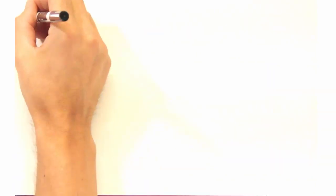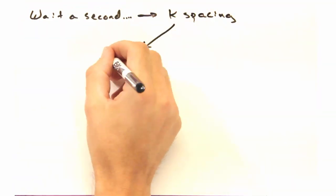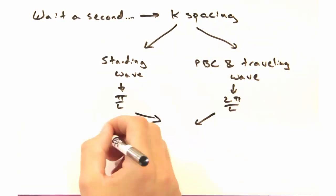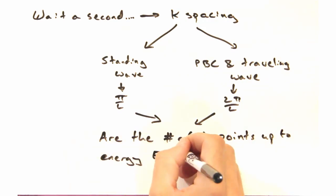This may seem a little unnerving at first. What is? The k spacing. What was it for the standing wave? Pi over l? Oh, they're different. Yeah, they are. Is that okay? Well, it should be if the number of points up to a certain energy level are the same. Exactly.